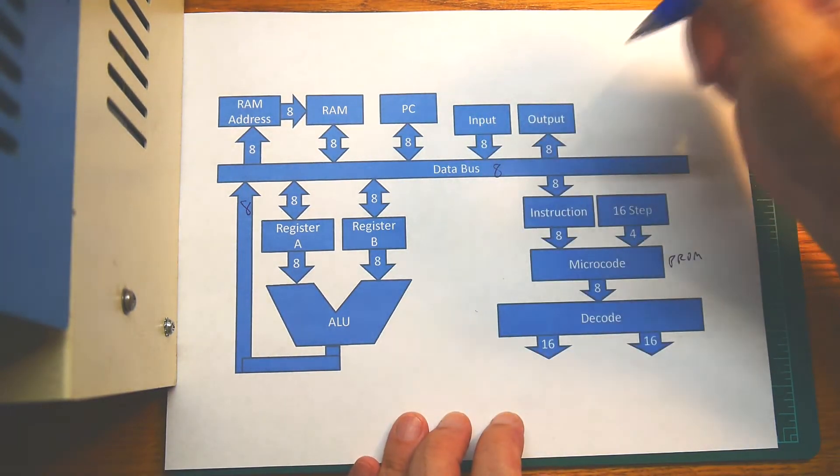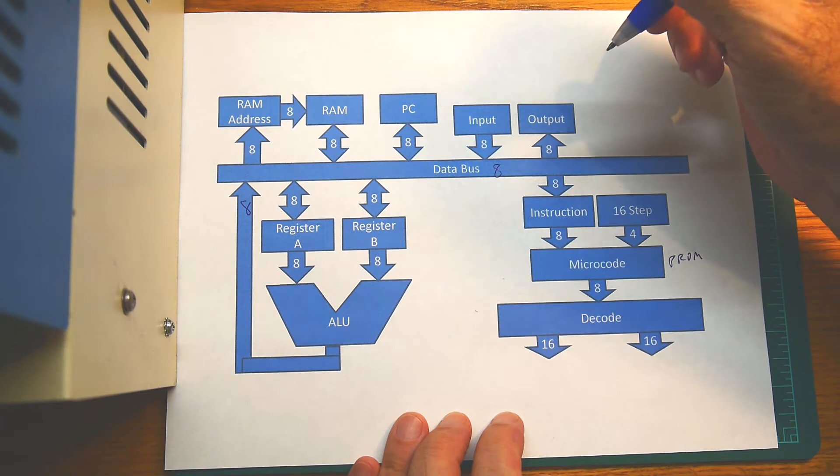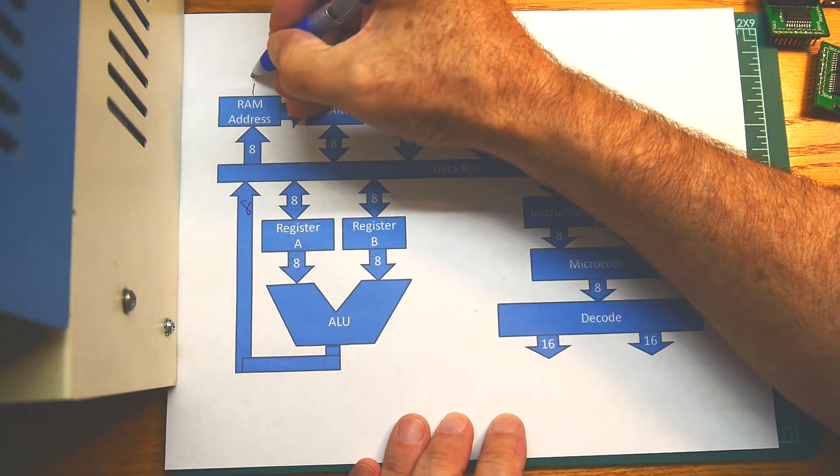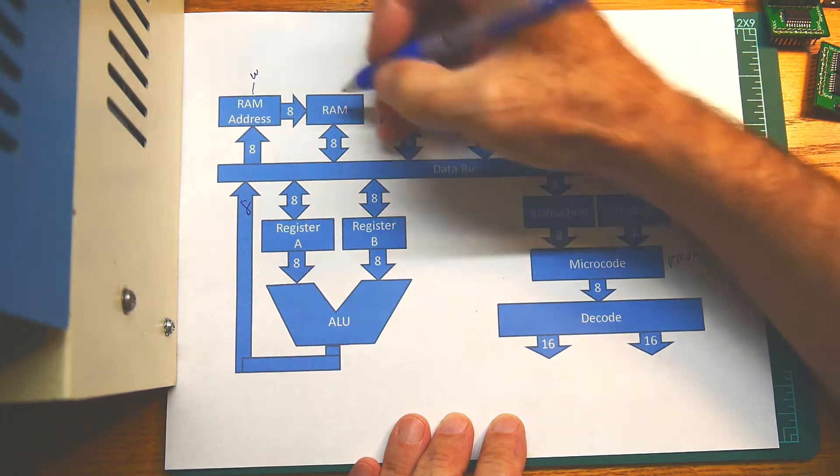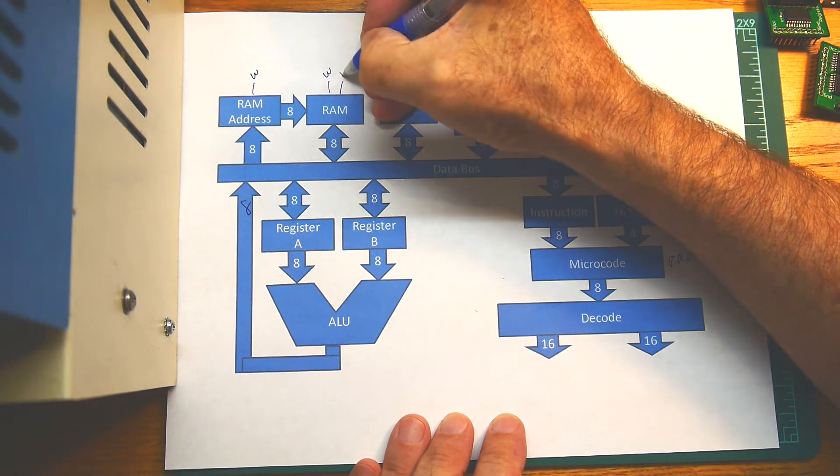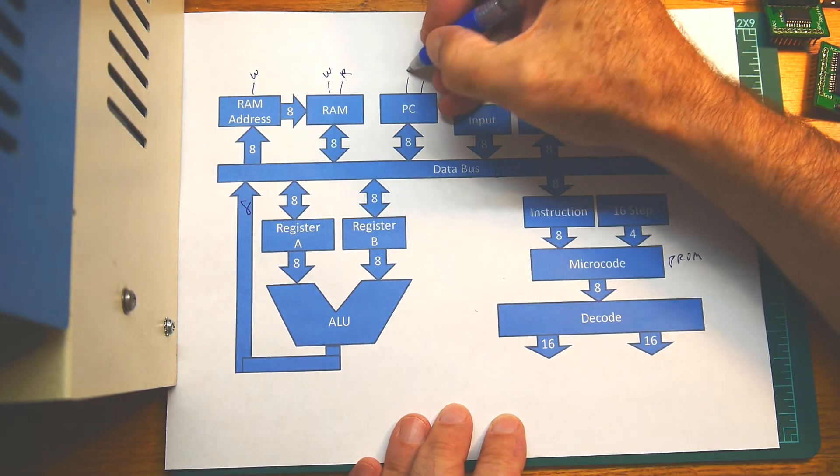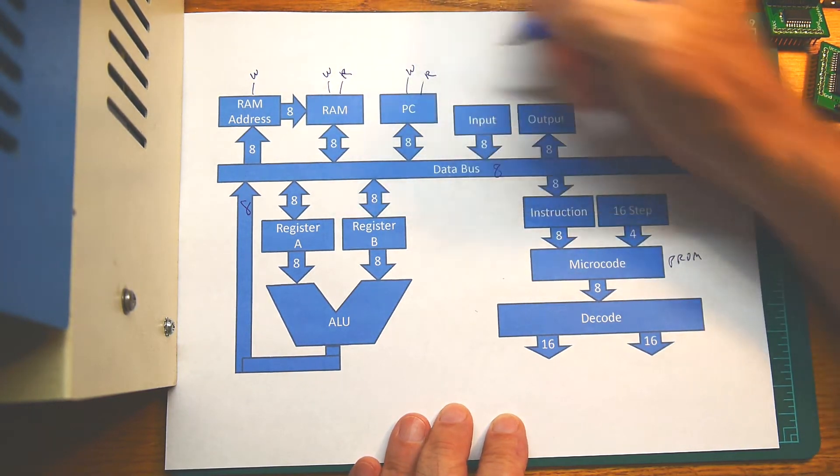So I think you've seen that. I think we've seen everything. So what we need to do is continue, I think, with this diagram to make it a little easier. So RAM address, there'll be a write signal here. The RAM has a read and a write. Program counter also has a read and a write.